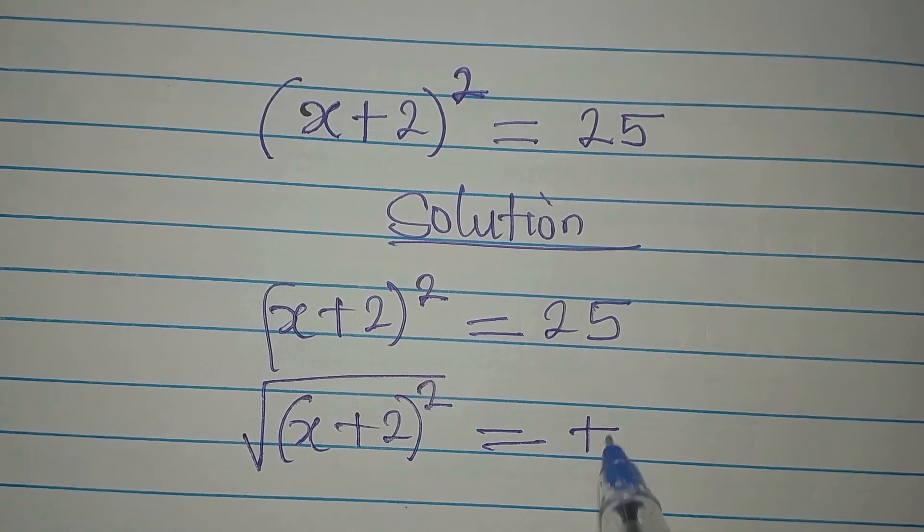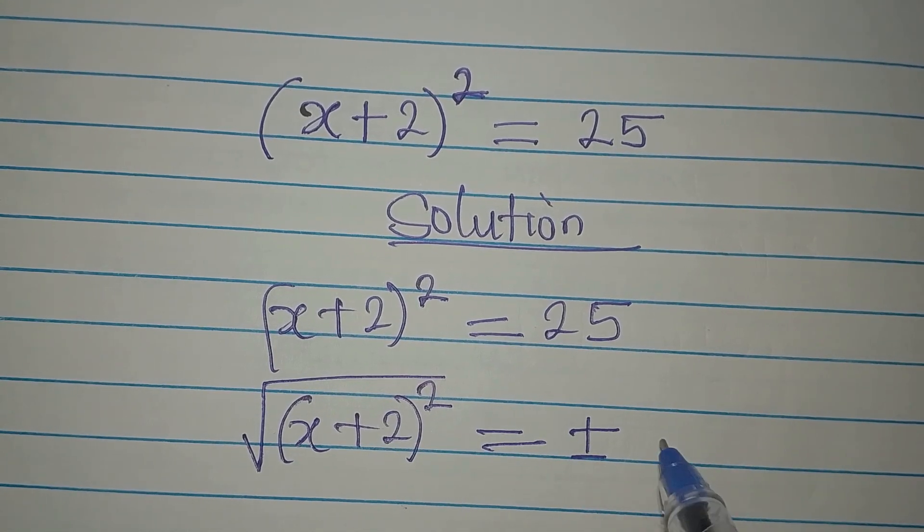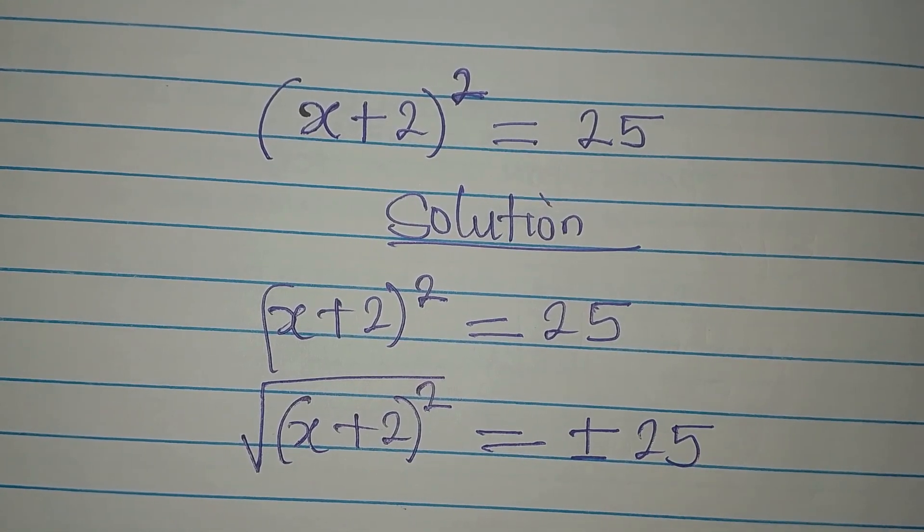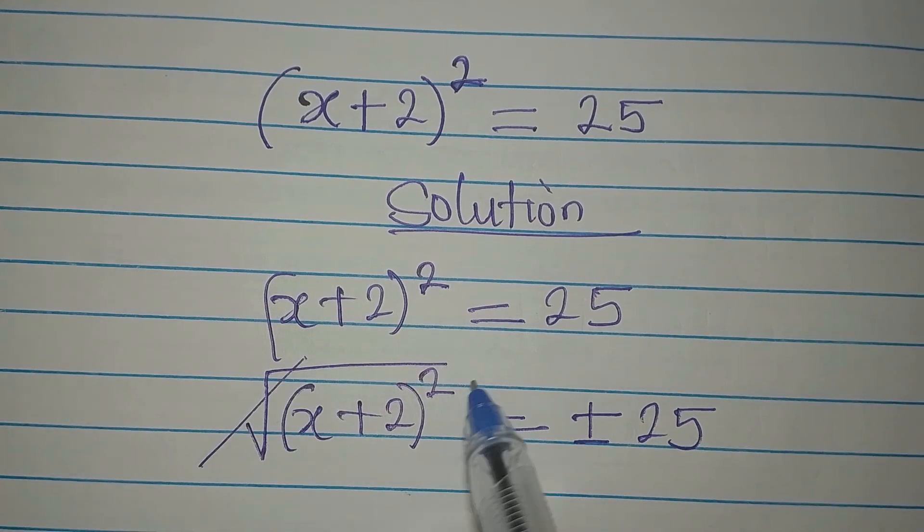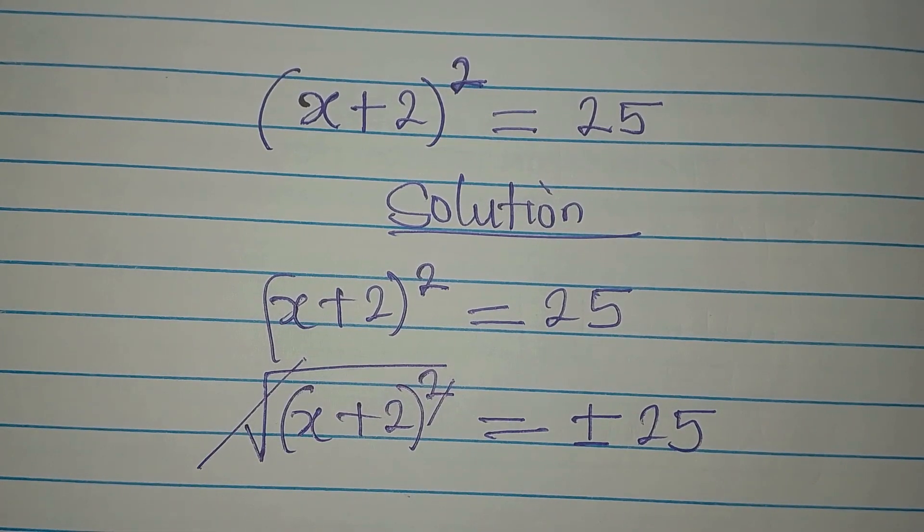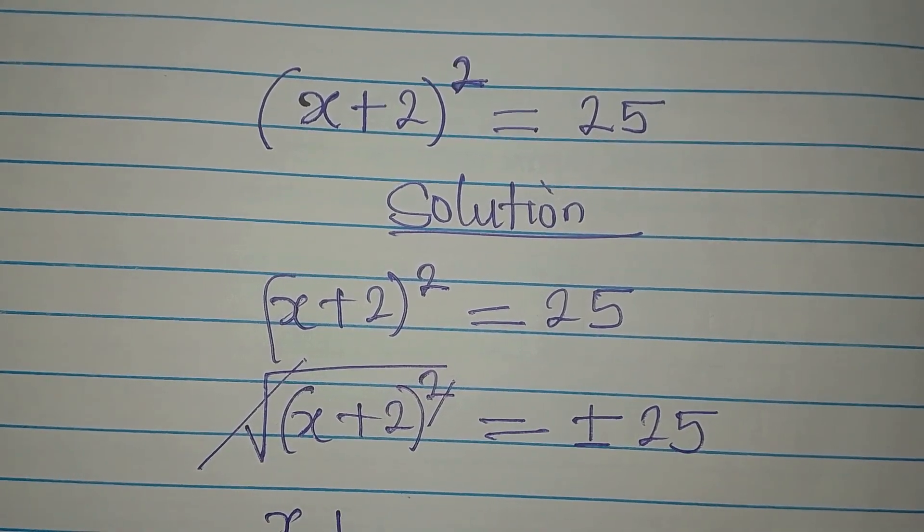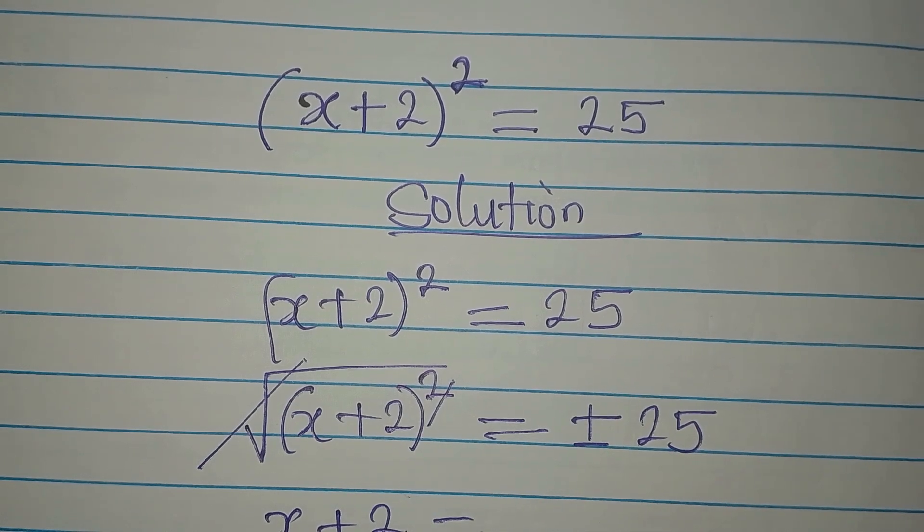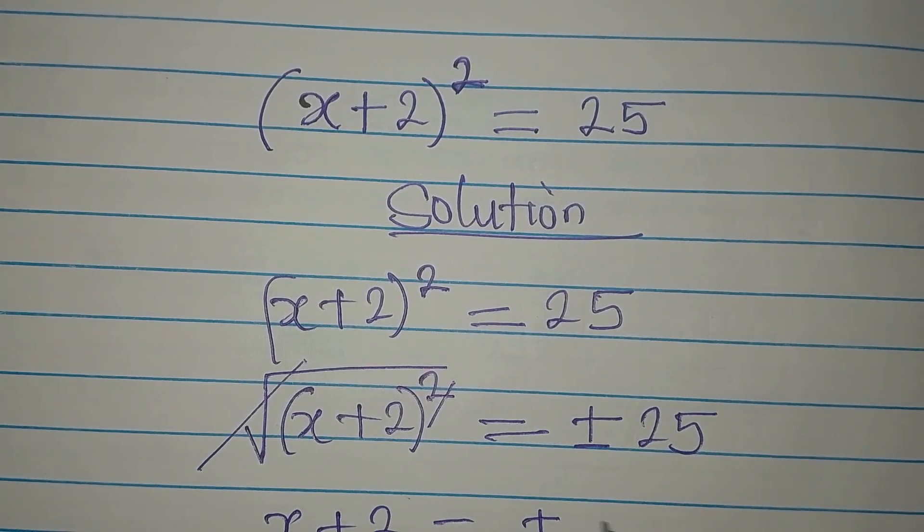But on the right, we have positive or negative square root of 25. Now, this is going to go with this one. Now we have x plus 2 to be equal to plus or minus 5.